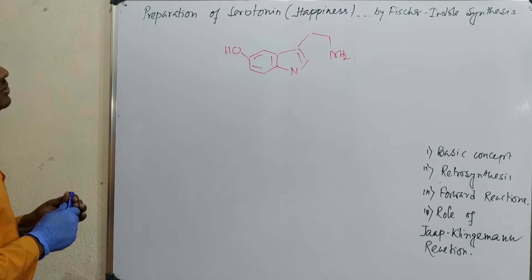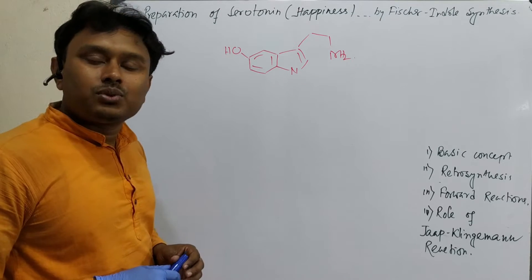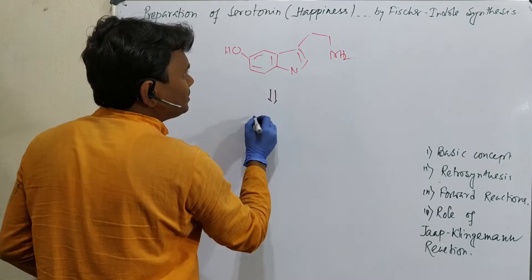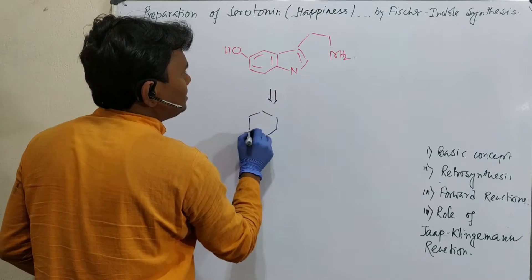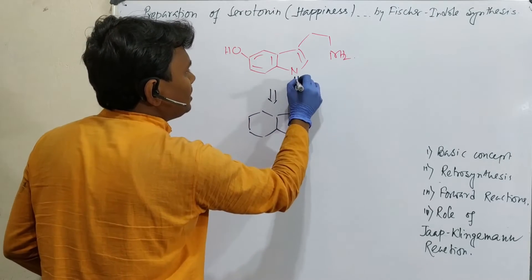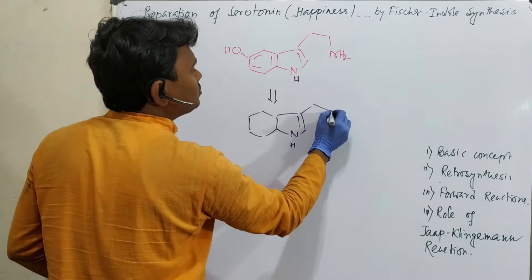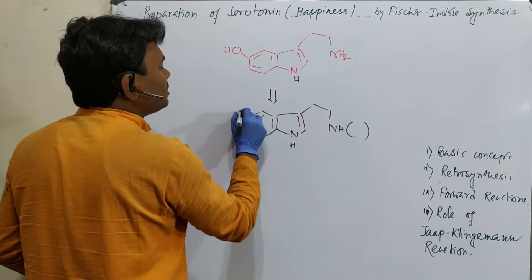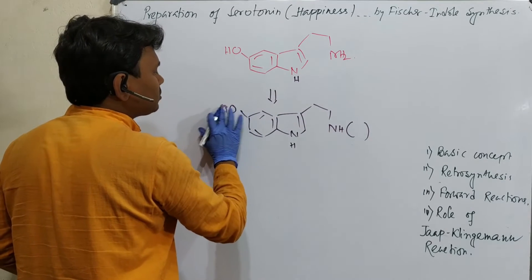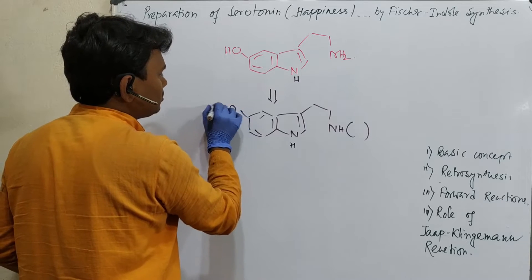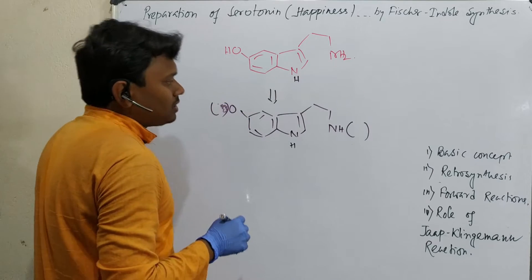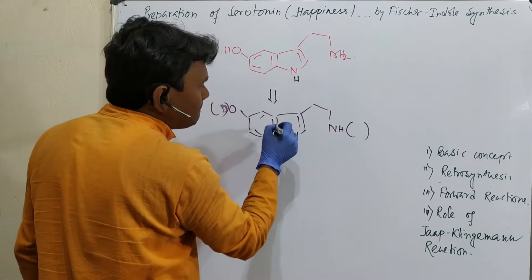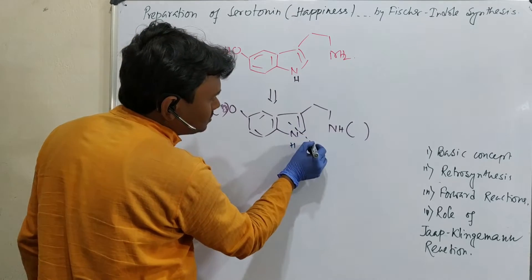Let's start. Through Fischer-Indole synthesis, first of all what is essential? We need to block the NH — protect it. Not only this NH, we also need to protect the OH. After that, in Fischer-Indole synthesis we will first break this bond — because of the 3,3 imine-amine coupling.